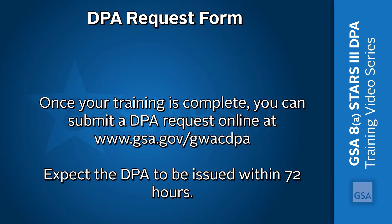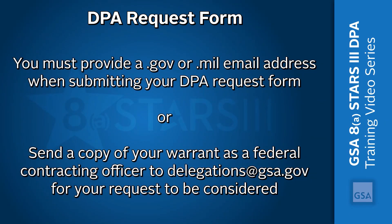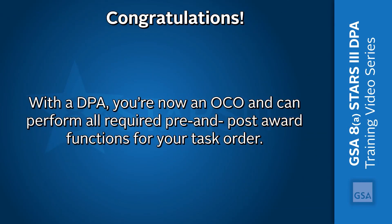Once your training is complete, you can submit a DPA request online at www.gsa.gov/GWACDPA. You can expect the DPA to be issued within three business days. You must provide a .gov or .mil email address when submitting the DPA request form. If you don't have one, you must send a copy of your warrant as a federal contracting officer to delegations@gsa.gov in order for your DPA request to be considered. With a DPA, you are now an OCO and can perform all required pre- and post-award functions for your task order.